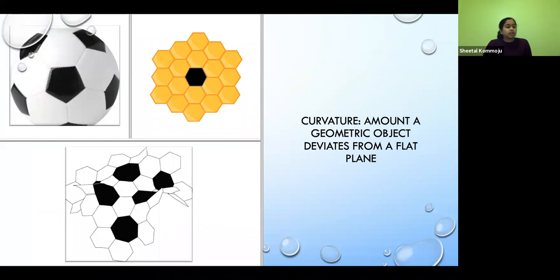So hyperbolic geometry is a type of non-Euclidean geometry and is also the geometry of constant negative curvature, and curvature is the amount a geometric object deviates from a flat plane.